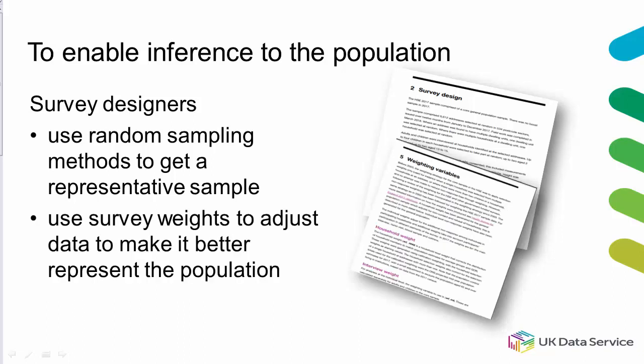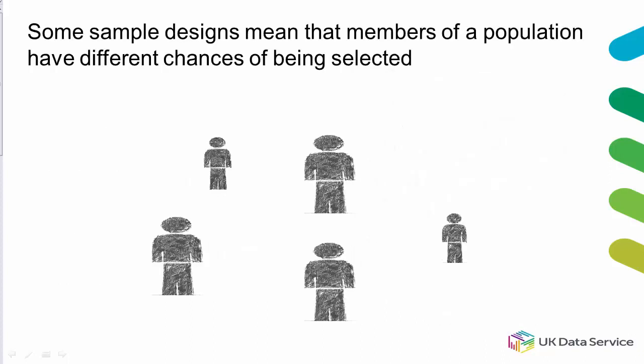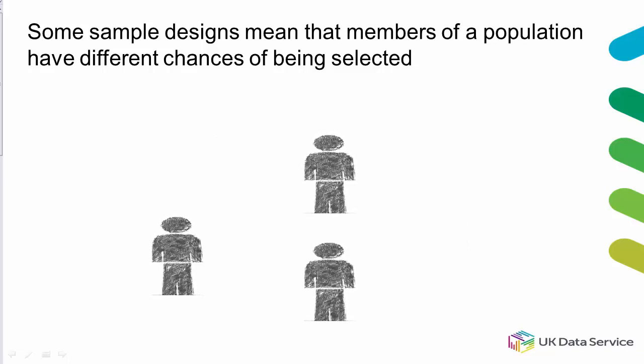Survey weights are also used to adjust sample data to make it better represent the population. One reason for weighting data is that common sampling methods can mean members of a population have different chances of being selected to take part.